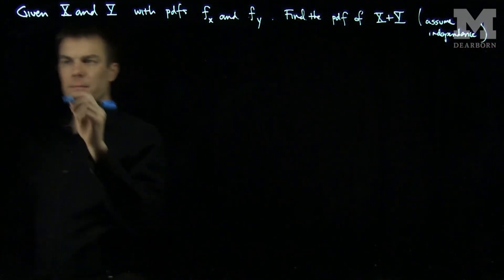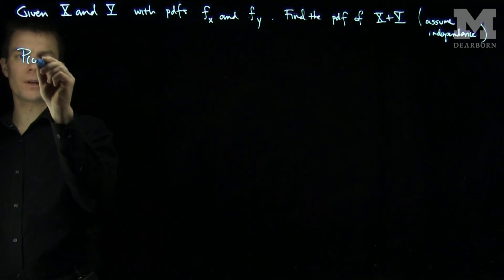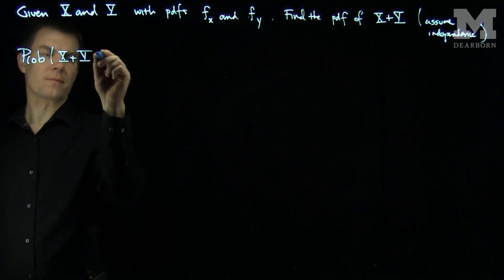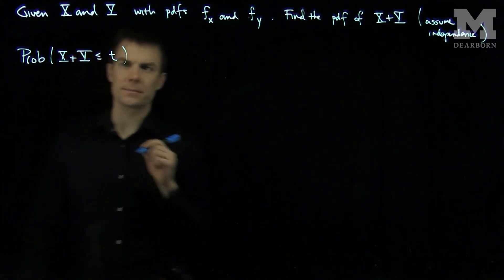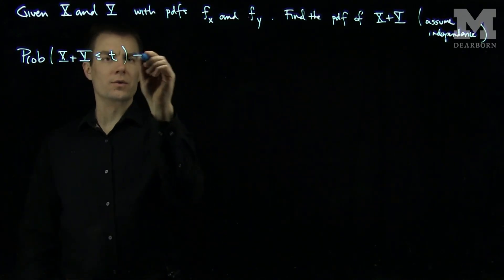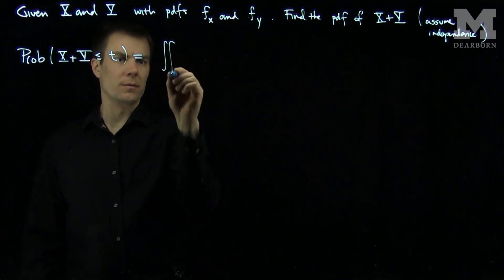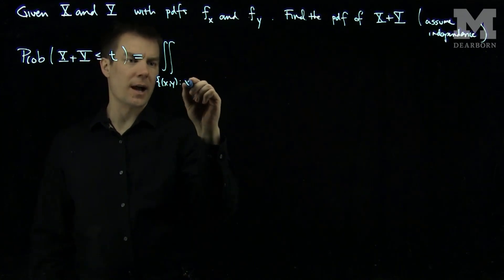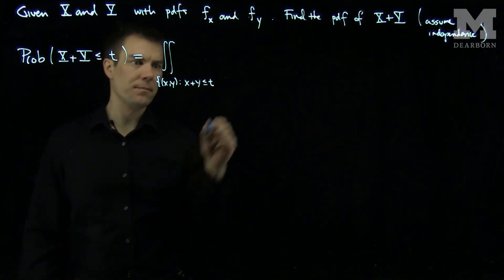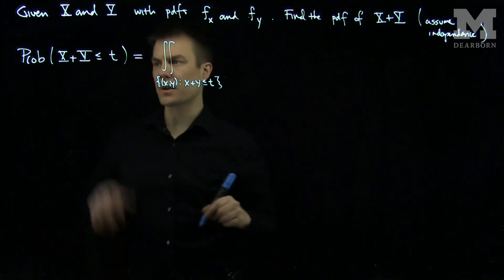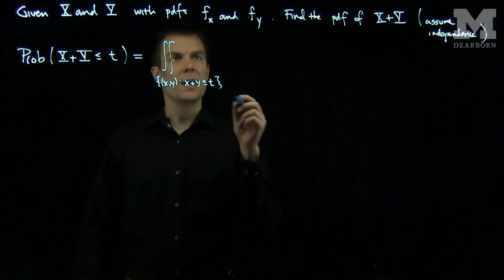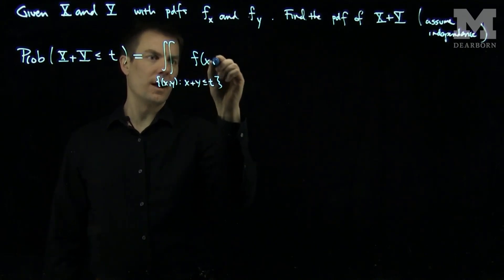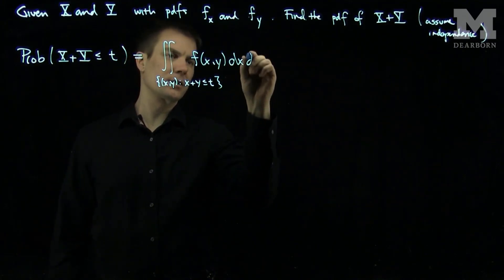So what we wish to find — let's do the CDF first. Let's compute the probability that x plus y is less than or equal to a parameter t. Well this will be equal to the double integral over the set of all points x and y such that x plus y is less than or equal to t. That's our region of integration, and then we integrate the joint PDF, f of xy, dx dy.